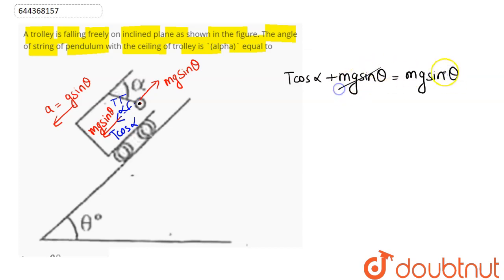Which means mg sine theta cancels out, so T cos alpha equals zero. Since tension is non-zero, cos alpha must be zero, hence the angle alpha equals 90 degrees as cos 90 equals zero.